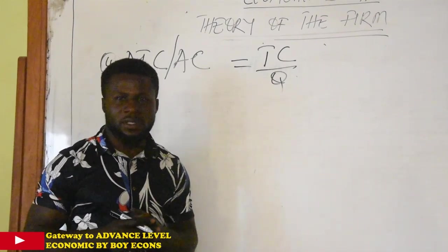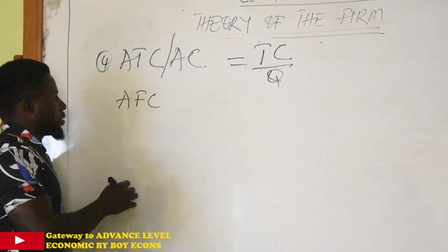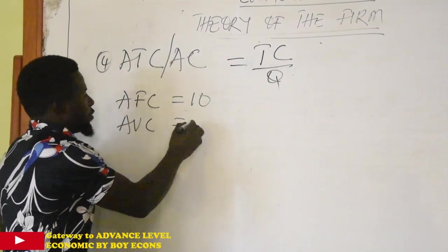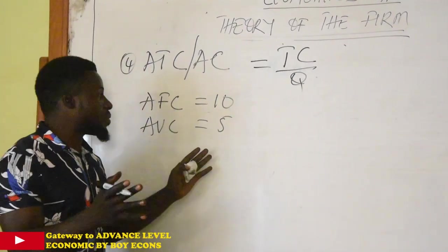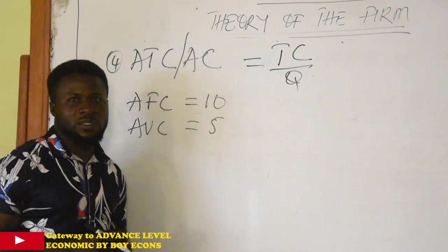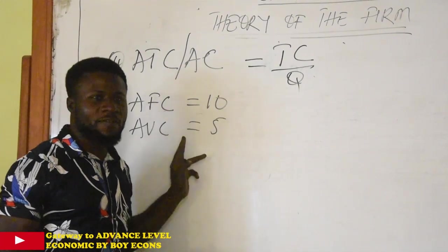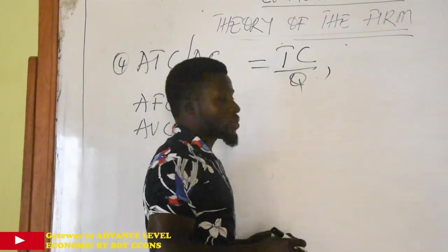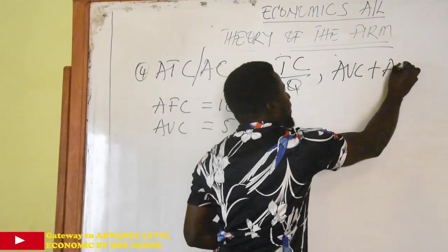And it will give you your average total cost. That is to say, you are given average fixed cost to be 10, average variable cost to be 5. It will be so simple to get your average total cost. We simply sum them up, we simply take average fixed cost plus average variable cost to give us our average total cost. So in case you find a question where they have not given you total cost and output, you rather have averages, you just sum them up. So this means that we can also get average total cost or average cost by summing average variable cost plus average total cost.